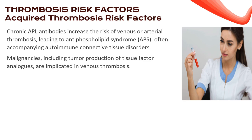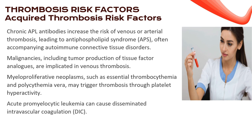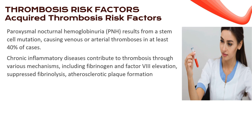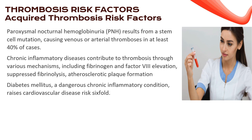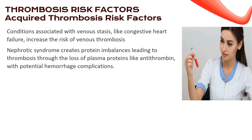Tumor production of tissue factor analogs raises the stakes in venous thrombosis, while myeloproliferative neoplasms like essential thrombocythemia trigger thrombosis through platelet hyperactivity. Acute promyelocytic leukemia can cause disseminated intravascular coagulation (DIC). Paroxysmal nocturnal hemoglobinuria — a stem cell mutation — is responsible for venous or arterial thrombosis in at least 40% of cases. Chronic inflammatory diseases contribute to thrombosis through fibrinogen and factor VIII elevation and atherosclerotic plaque formation. Diabetes mellitus raises cardiovascular disease risk six-fold. Nephrotic syndrome creates protein imbalances leading to thrombosis, with potential hemorrhage complications.